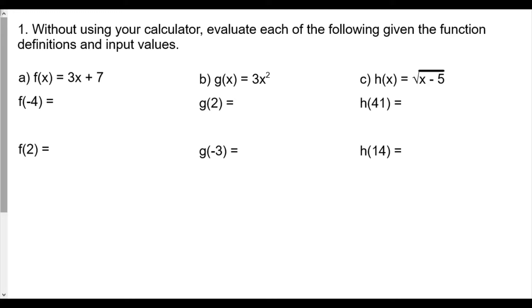What that really means is you're going to take three times whatever you plug in and then add seven. The notation is f of negative 4, which means we're plugging in negative 4 into x. So we get three times negative 4 plus 7, which is negative 12 plus 7 or negative 5. For f of 2, we're going to plug in 2 for x, so three times 2 plus 7 or 6 plus 7, which is going to be 13.